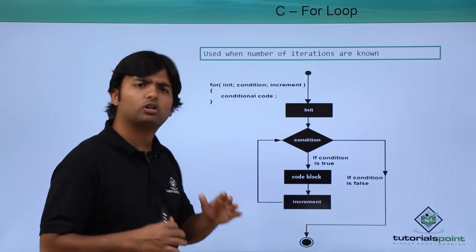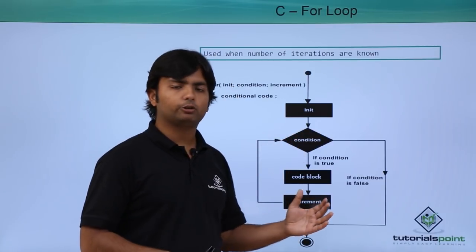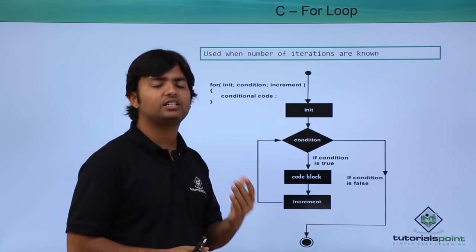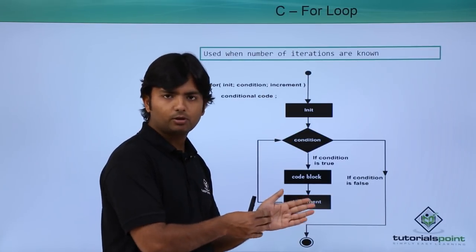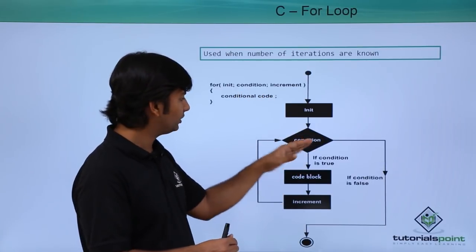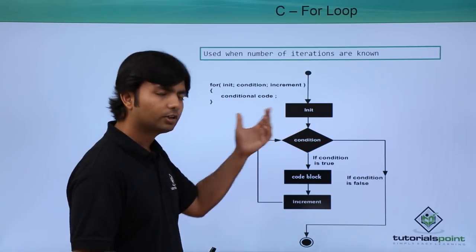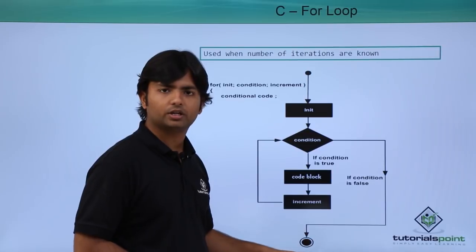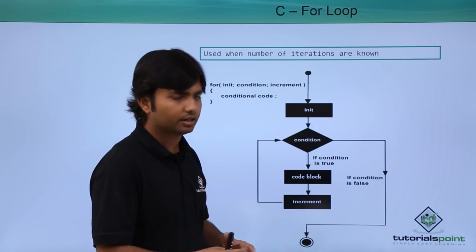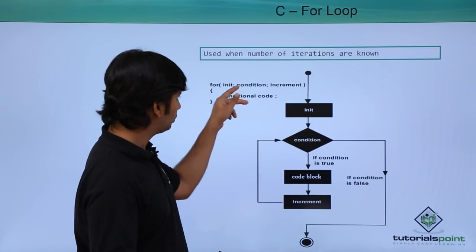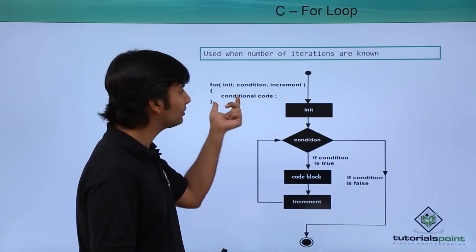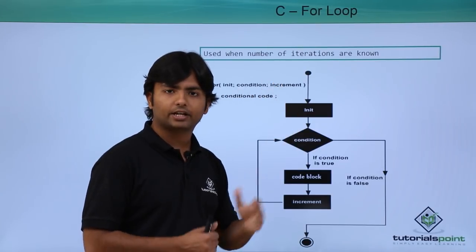We can also see a flowchart showing how execution works. On the first iteration only, the initialization part is done — the variable responsible for loop execution is initialized. Then, before entering the code block, we check the condition. If the condition is false the loop gets terminated immediately. If the condition is true, the code block executes, and then control jumps to the increment — the update part.